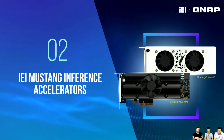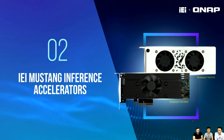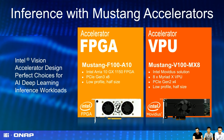That was the introduction to OpenVINO by Intel FAE Sherman. Now we'll look at the IEI Mustang inference accelerators, which can speed up AI development performance. Hello everyone, I'm Brian, product manager from IEI, and I'm going to introduce our AI accelerator card solutions. We have two models developed in cooperation with Intel: the Mustang F100-A10 and the Mustang V100-MX8.